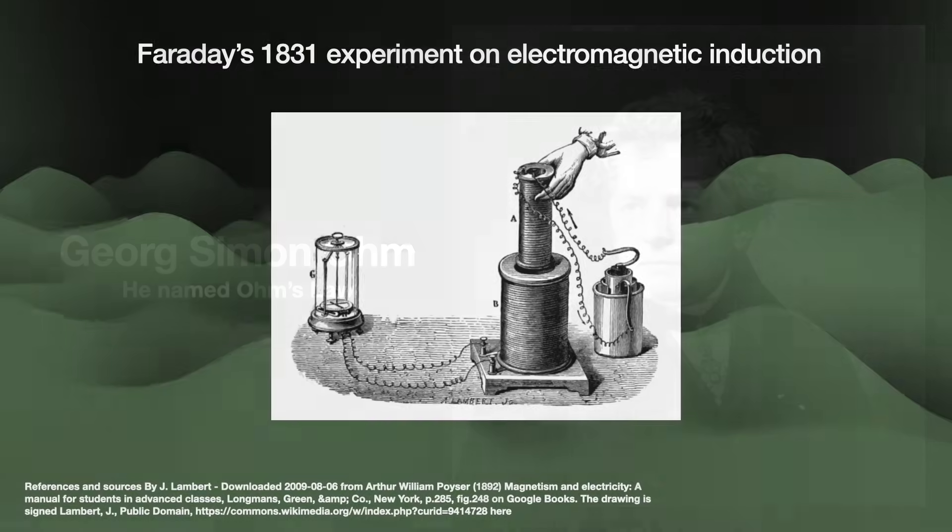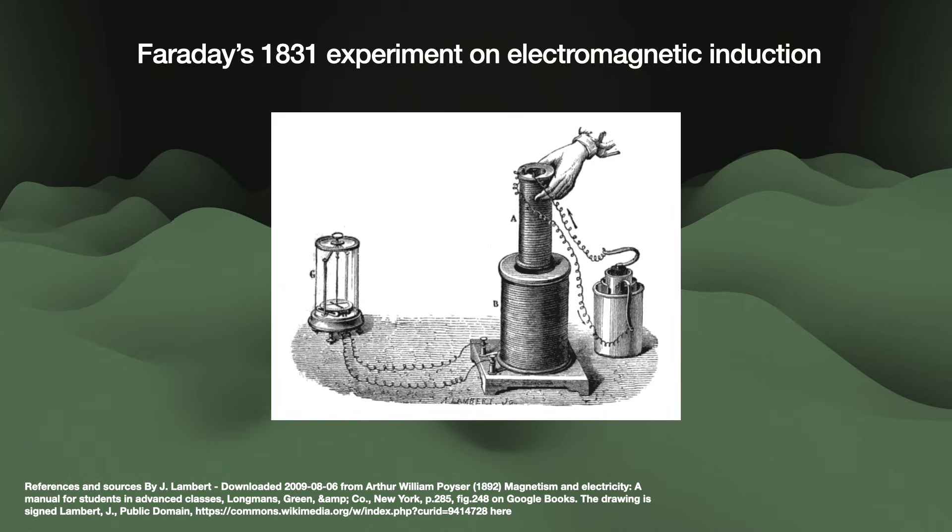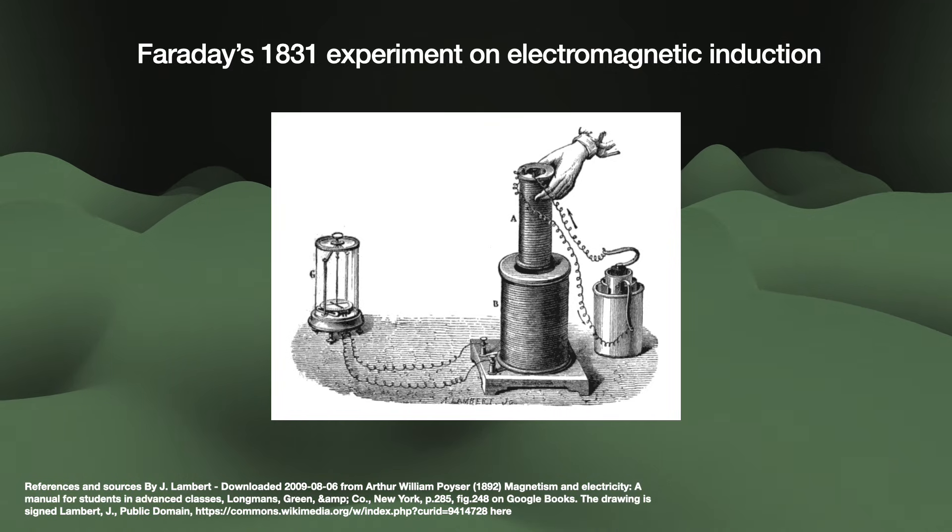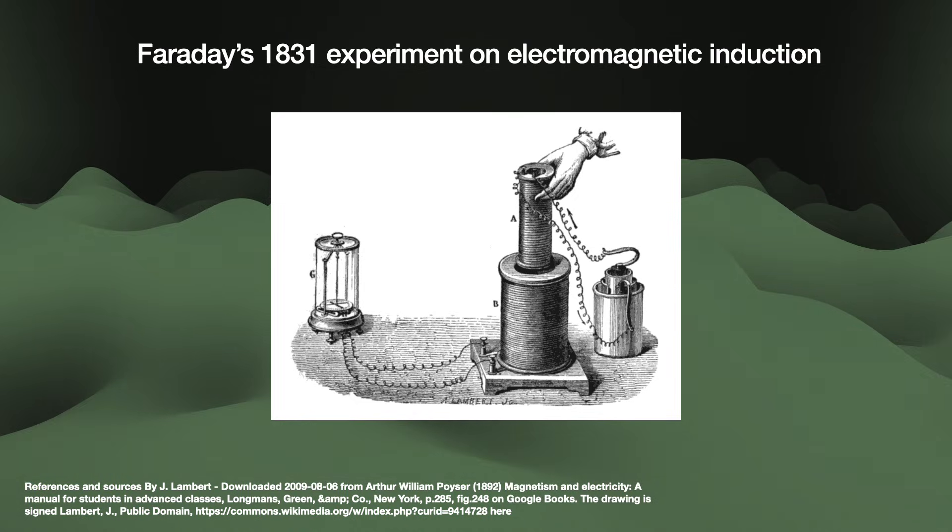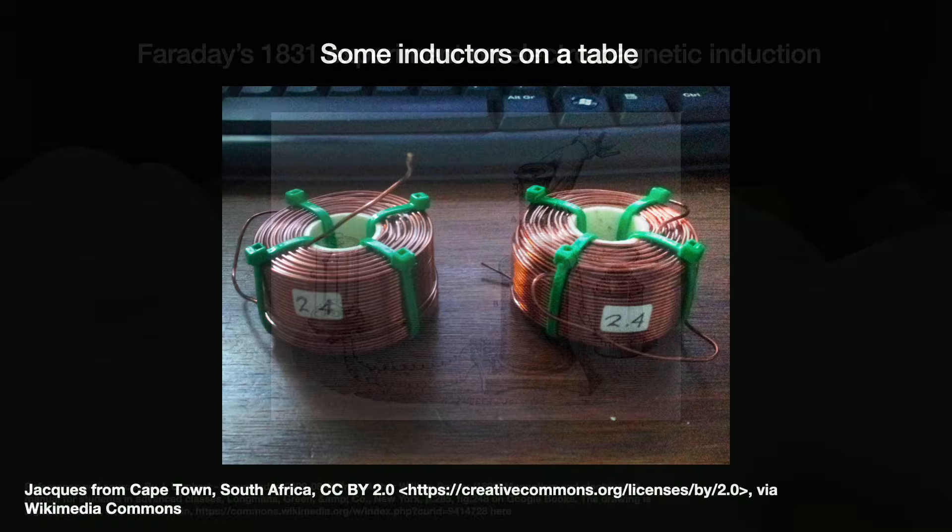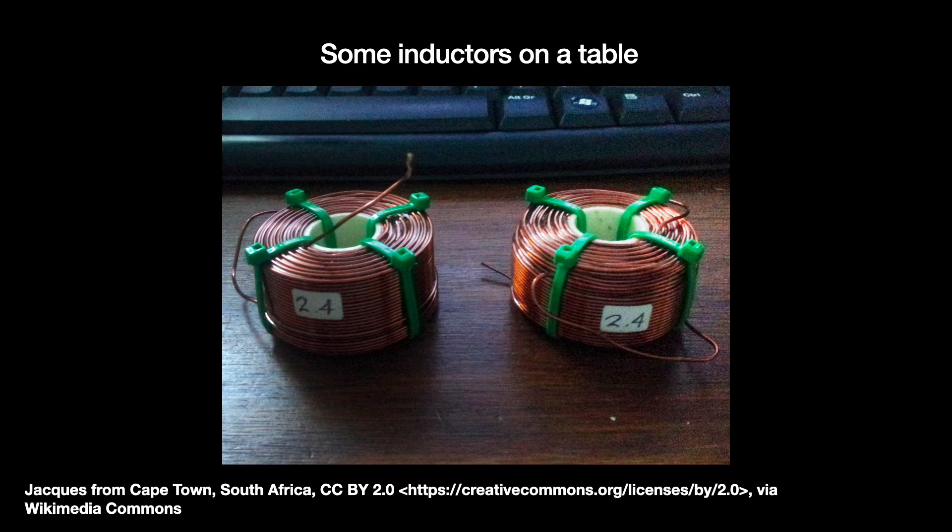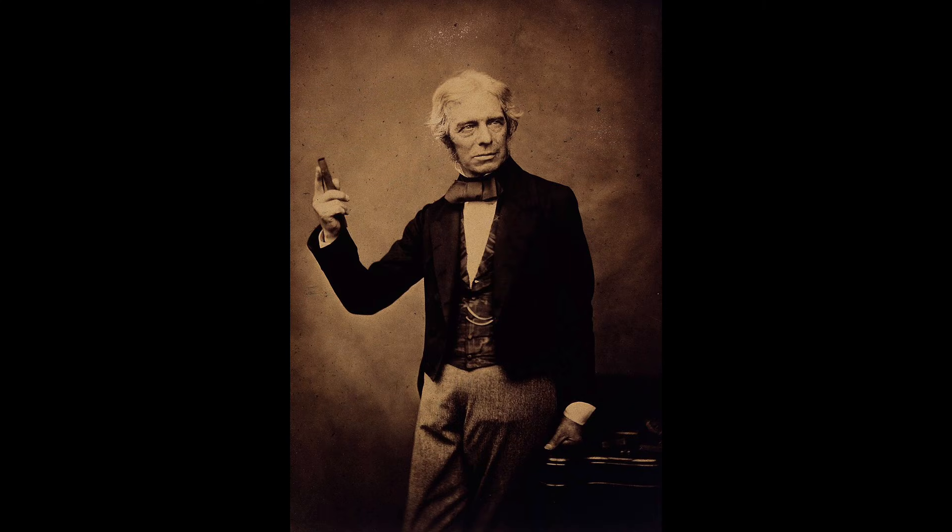Then we have the inductor. In 1831, Michael Faraday discovered electromagnetic induction. In his experiment, he wrapped a paper tube in wire, attached a galvanometer to the wire's ends, and moved a magnet in and out of the tube. The inductor stores electrical energy in a magnetic field when current is passed through it. Thus it relates current and changes in the magnetic field, called flux linkage. This relationship is described by Faraday's law of induction. Through it, we can also draw a relationship between voltage and flux linkage.